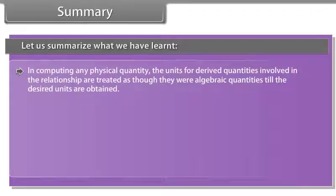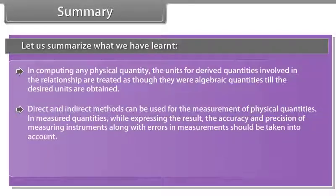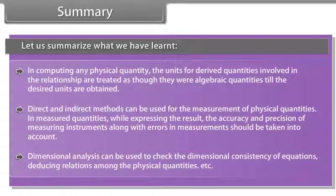In computing any physical quantity, the units for derived quantities involved in the relationship are treated as though they were algebraic quantities till the desired units are obtained. Direct and indirect methods can be used for the measurement of physical quantities. In measured quantities, while expressing the result, the accuracy and precision of measuring instruments along with errors in measurement should be taken into account. Dimensional analysis can be used to check the dimensional consistency of equations, deducing relations among the physical quantities, etc.